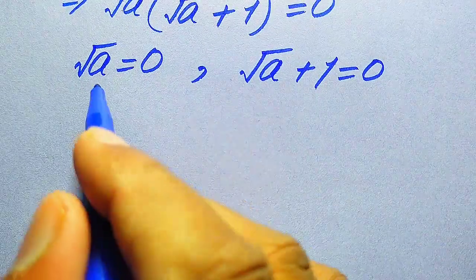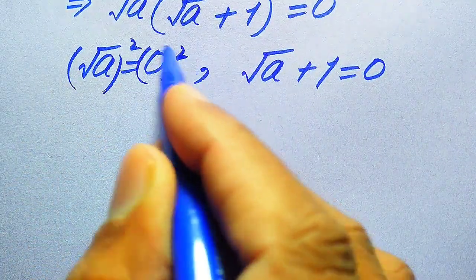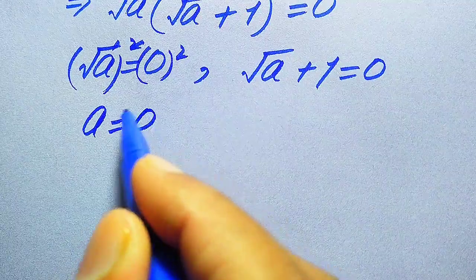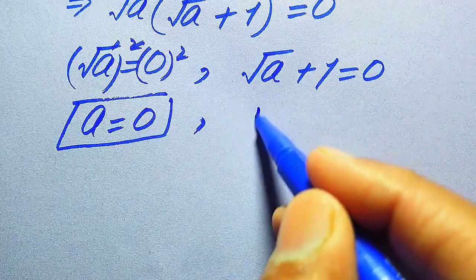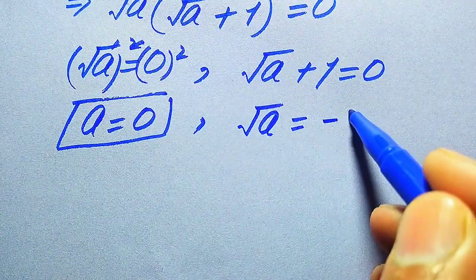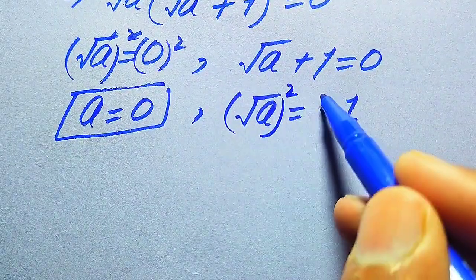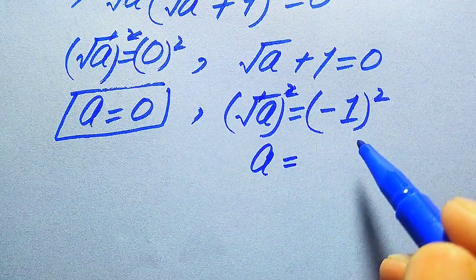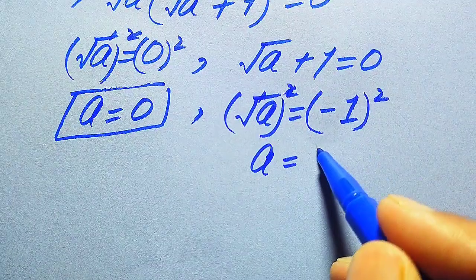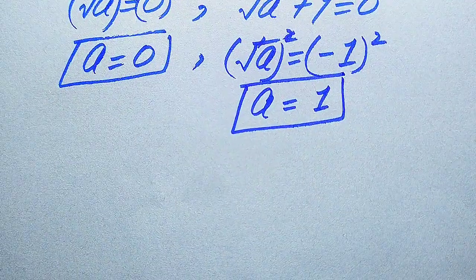From the first case, we square both sides — the square and square root cancel — and we get A equals 0. This is the first root of the given equation. From the second case, we move plus 1 to the right hand side to get square root of A equals minus 1. Squaring both sides, the square and square root cancel, and we get A equals minus 1 squared, which becomes plus 1. So A equals 1 is the second root obtained from the second method.